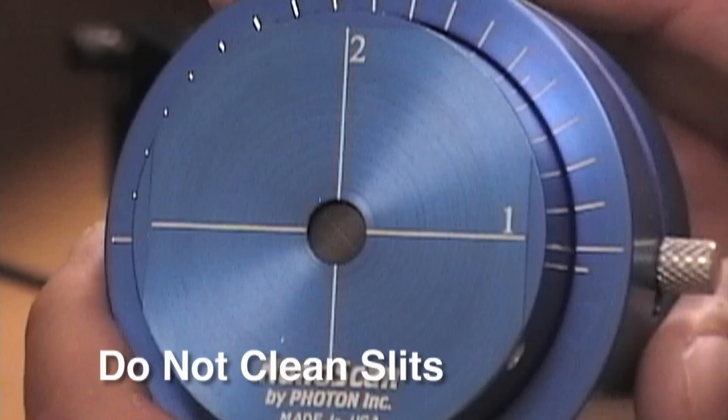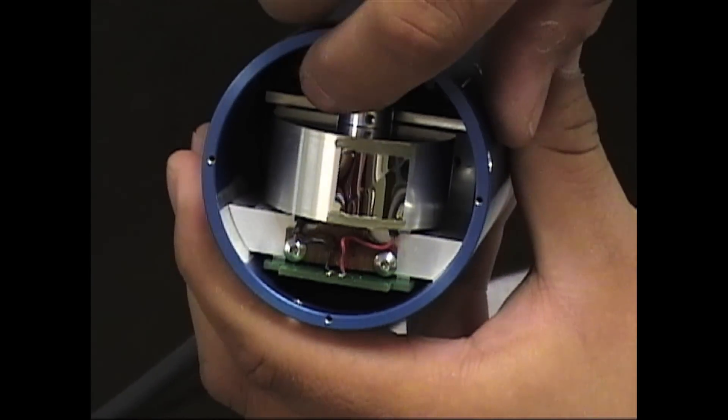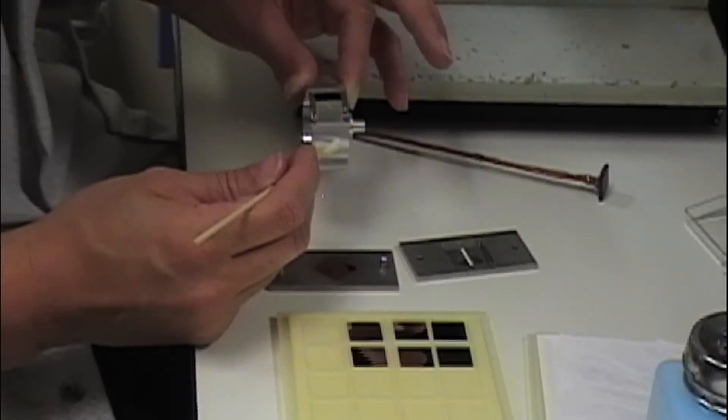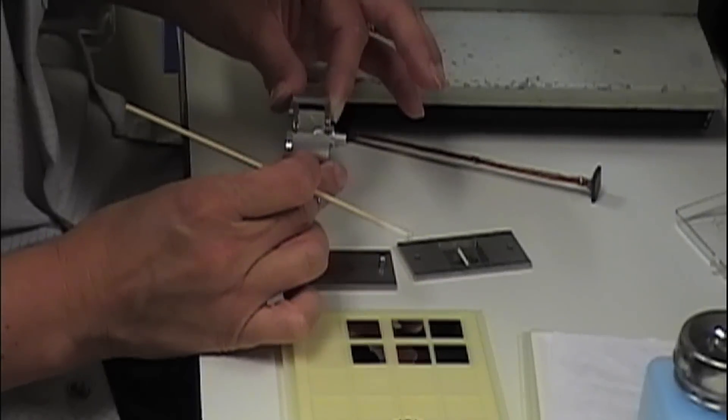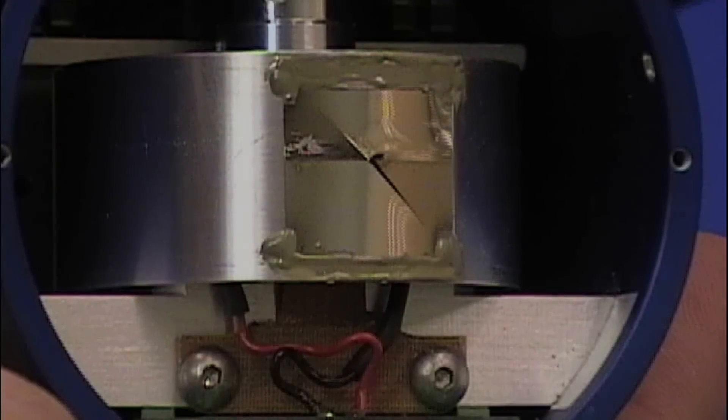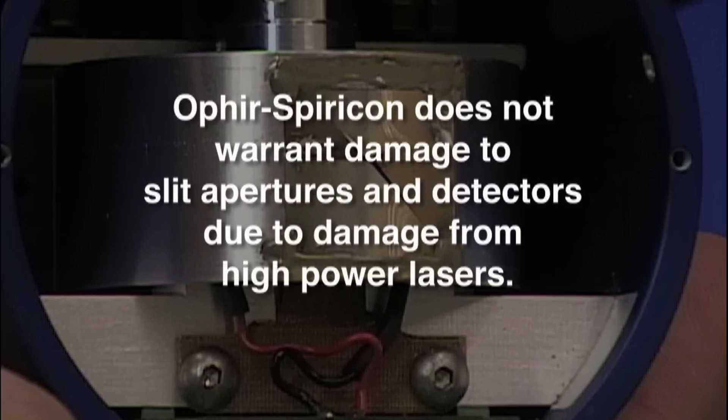Do not, under any circumstances, attempt to clean the apertures with solvents. If aperture contamination is suspected, it is recommended that the unit be returned to Ophir Spiricon for aperture inspection, cleaning or replacement, and recalibration. Ophir Spiricon does not warrant damage to slit apertures and detectors due to damage from high-powered lasers.